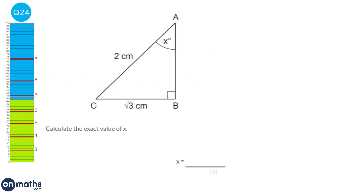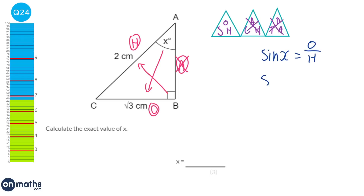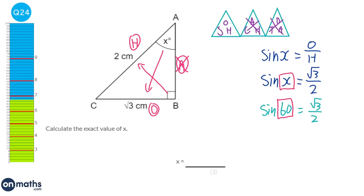This is a right-angle triangle with two lengths and an angle, so it's trigonometry. Label the sides: hypotenuse opposite the right angle, opposite the marked angle, and adjacent between the right angle and marked angle. The adjacent has no value so we ignore it, leaving us with SOH. Sine of x equals opposite over hypotenuse, which is root 3 over 2. From memory, sine 60 equals root 3 over 2, so x equals 60 degrees.